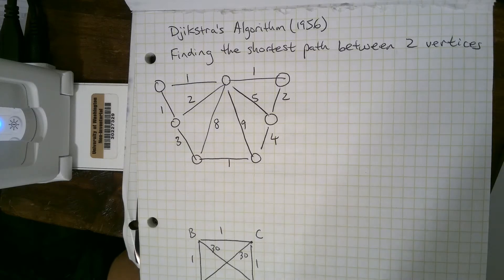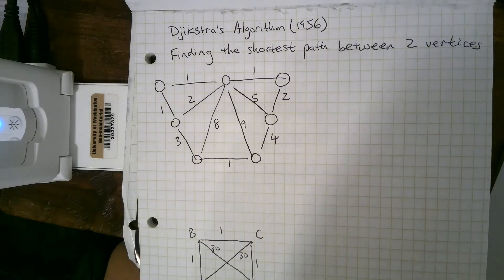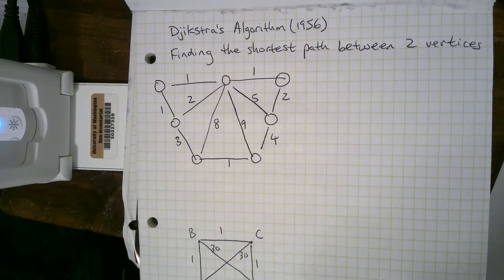In this video, we'll talk about Dijkstra's algorithm, which was found in 1956, and it's an algorithm for finding the shortest path between two vertices.